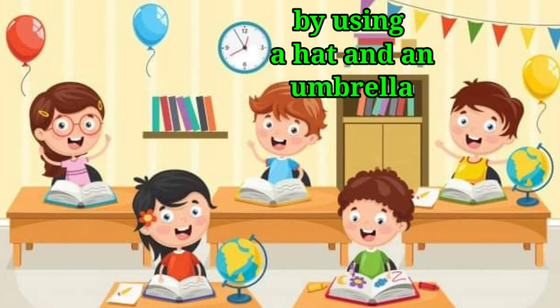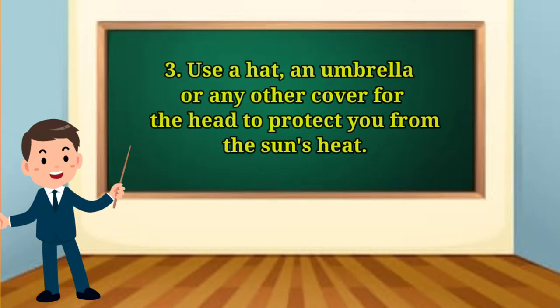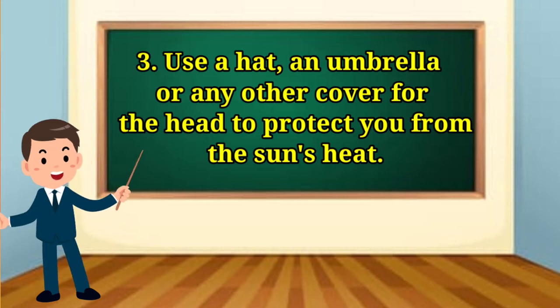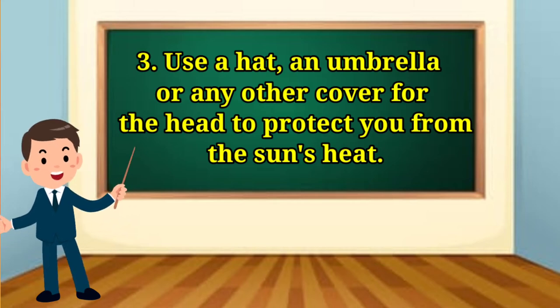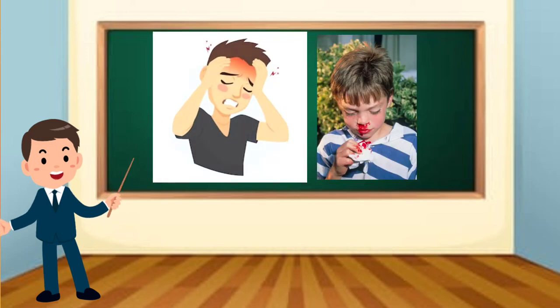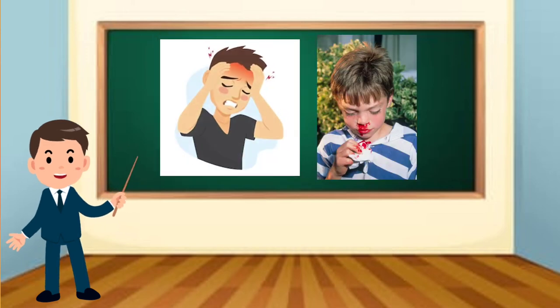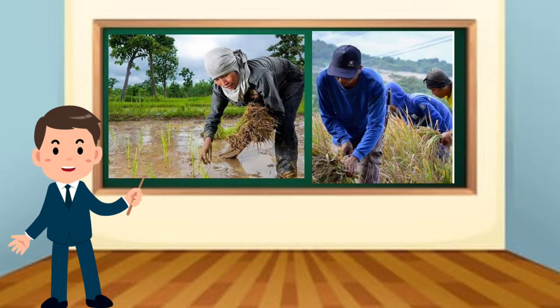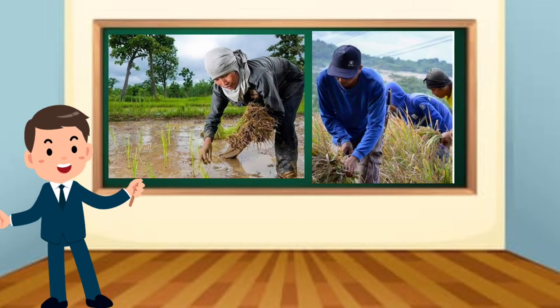How do they protect themselves from the Sun's heat? By using a hat and an umbrella. That's right! Use a hat, an umbrella, or any other cover for the head to protect you from the Sun's heat. Prolonged exposure to the Sun's heat can cause headache or even nosebleed.